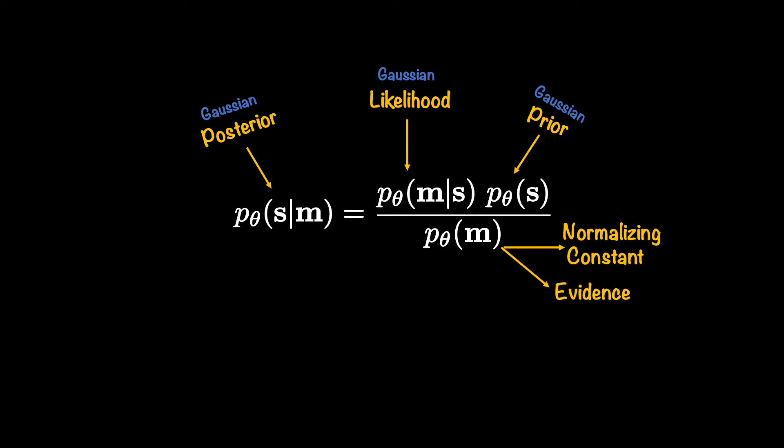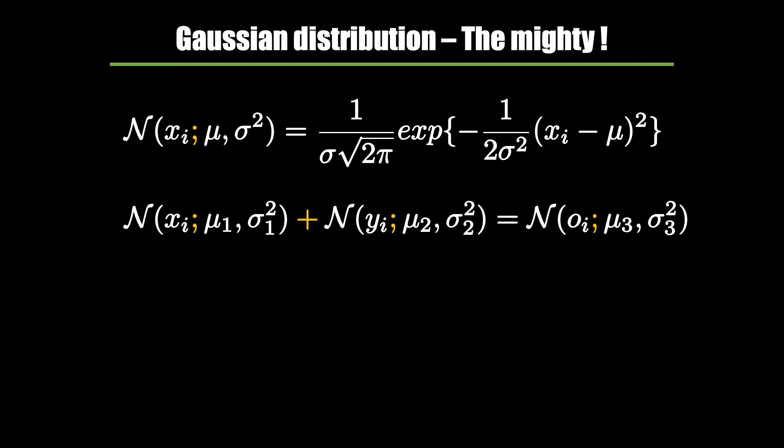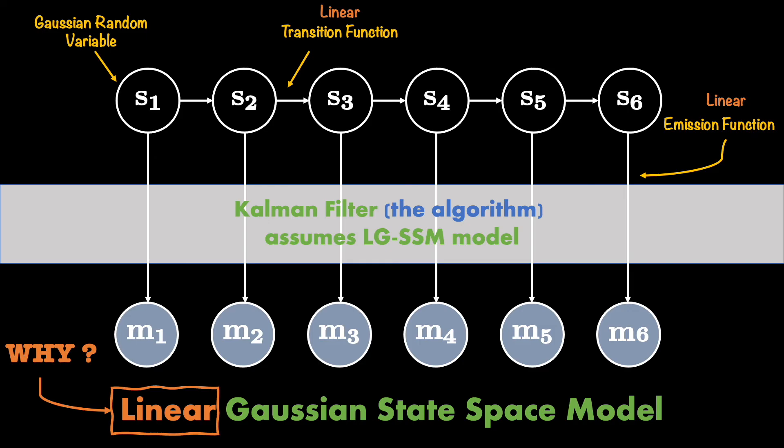So if our likelihood and prior are Gaussian, we are good. While we are on the topic of Gaussian distribution, here are a few more things you should know. When you add two normal distributions, you get a normal distribution. When you multiply two normal distributions, you get a normal distribution. And when you have a random variable that follows a normal distribution conditioned on another random variable that also follows a normal distribution, you again get a normal distribution. These properties are important because in our Bayesian filtering equations we have conditional distributions and we were multiplying them as well. As long as we can have normal distributions as components in those equations, we have an analytical solution — a workaround for our difficult-to-compute integrals.